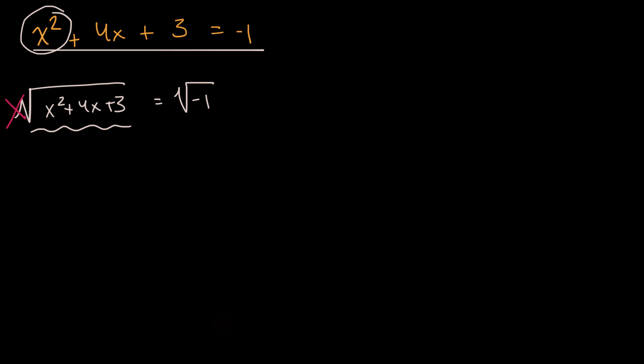Another strategy that sometimes people will try to go for is to isolate the x squared first. So let me just rewrite it, x squared plus four x plus three is equal to negative one. They might say, let's isolate that x squared by subtracting four x from both sides and subtracting three from both sides. And then what happens? On the left-hand side, you do indeed isolate the x squared. And on the right-hand side, you get negative four x minus four.